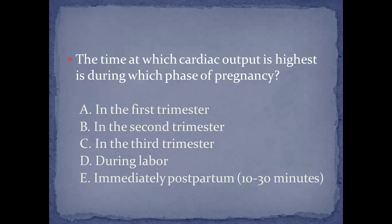Third question: cardiac output is highest during which phase of pregnancy? Is it the first trimester, second trimester, third trimester, during labor, or immediately postpartum? We know there is hemodilution and increased cardiac output, with increased blood volume maximally reached at 28 to 32 weeks. However, cardiac output is actually highest immediately postpartum due to autotransfusion of blood from the uterine circulation. So the answer is E: immediately postpartum.